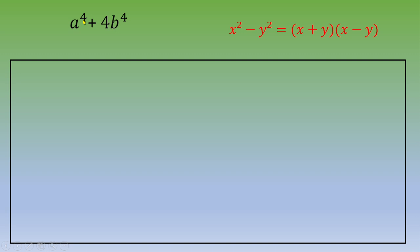a to the 4 is also a squared squared. And we can modify 4 as well. This is 2 squared, and b to the 4 is b squared squared. So we end up with two squared numbers.